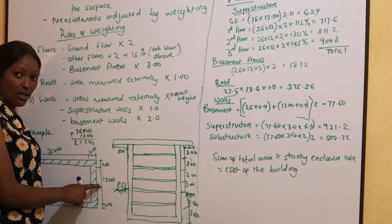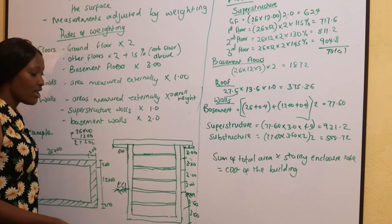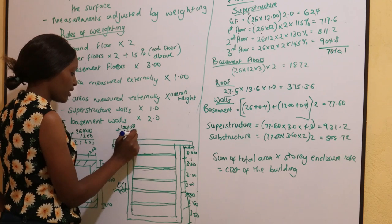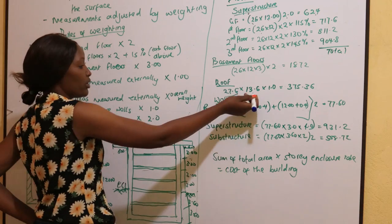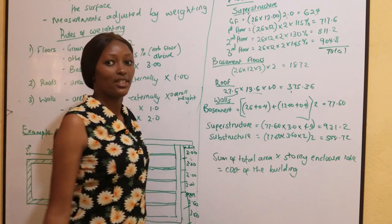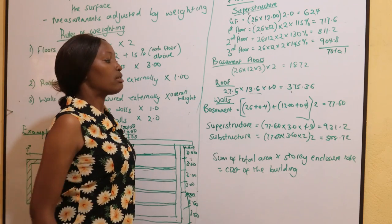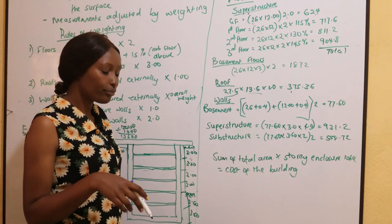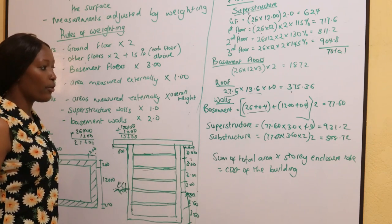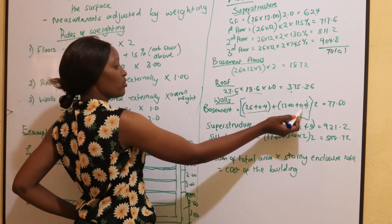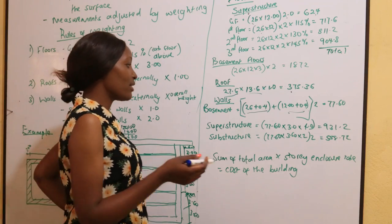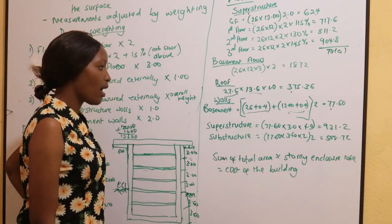For the width dimension: 12,000 plus 200 plus 200 gives 12,400, then we add 1,200 for the eaves, giving 13,600, or 13.6m. We multiply the roof area — 27.6 by 13.6 — by a factor of one, giving 375.36 square meters. For the walls, we take the external dimensions: 26,000 plus 400 gives 26.4m, and 12,000 plus 400 gives 12.4m.